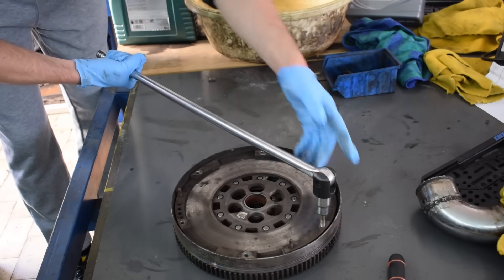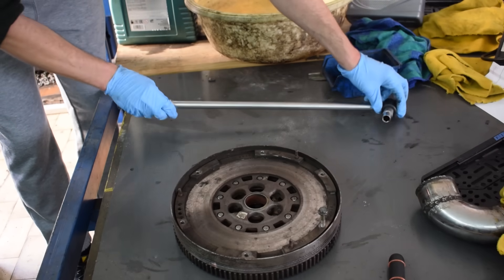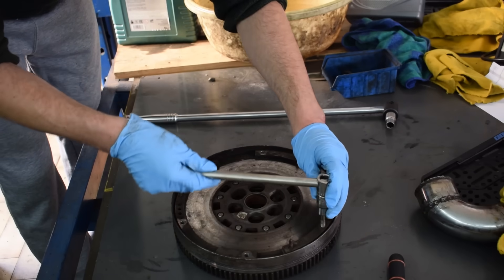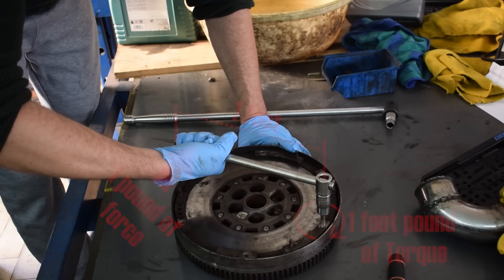Newton meters confuse you? No problem, because torque can also be easily expressed in foot pounds. One foot pound of torque is equal to the force of one pound being applied at the end of an arm that is one foot long.